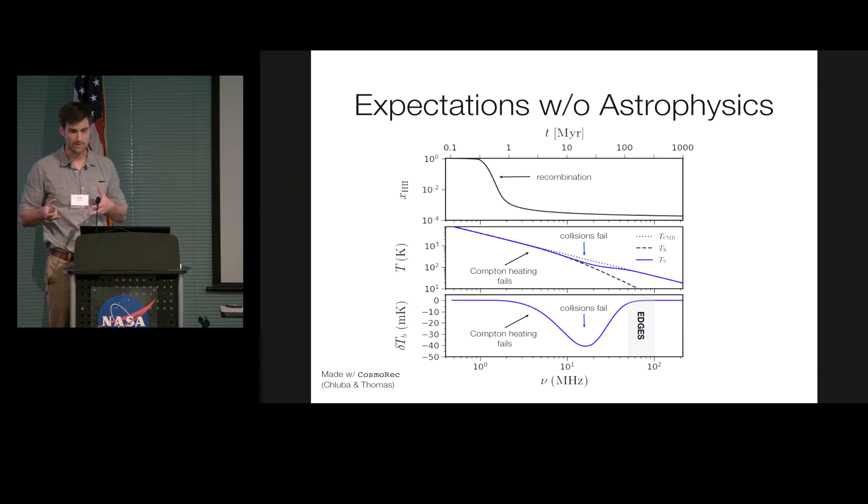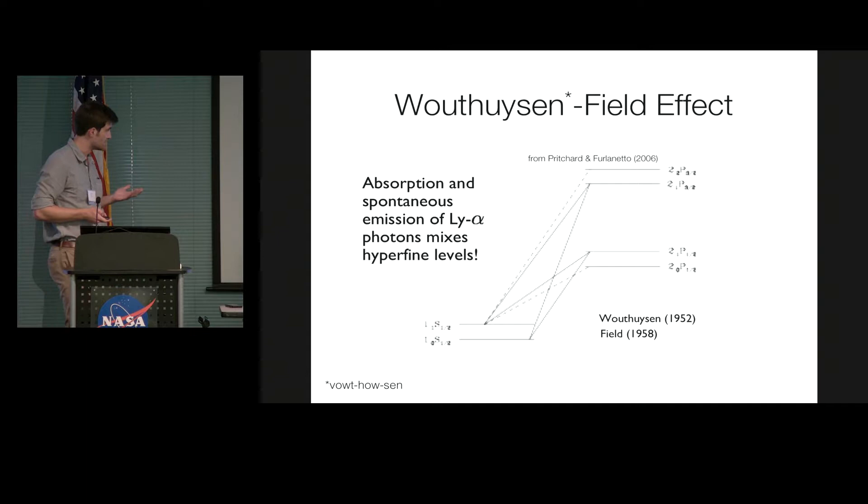So edges recently reported this detection at 80 megahertz, which is in this gray band here. And so you might be wondering after all of this, why we'd expect a signal in that band at all. And this is where astrophysics enters the signal. So once the first sources of light turn on, they emit UV photons. And the intergalactic medium is very opaque to UV photons, particularly Lyman alpha photons. So as these photons redshift and cascade through the Lyman series, spontaneous absorption and re-emission of photons can actually flip the hyperfine spin states. So this provides a new coupling mechanism in the high redshift intergalactic medium.